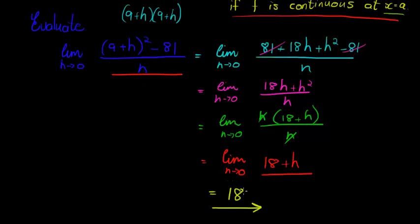Again, that means that when h is close to 0, this expression will be close to 18. When h gets closer to 0, this expression will get closer to 18. And I can get as close to 18 as I possibly want to by just getting close enough to 0.